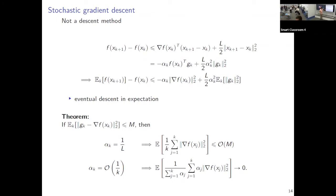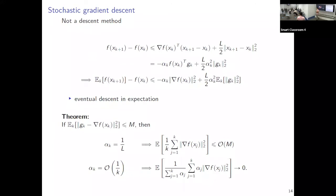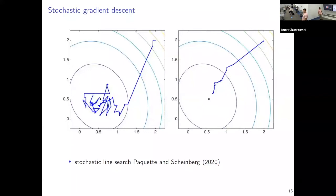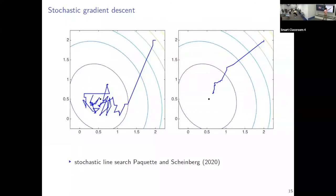One can show, as you would learn in an optimization course, that if the gradient estimates have bounded variance, then with a constant step size, the residuals converge to a neighborhood of some radius that depends on the noise size. If the step size decreases, the residuals go to zero, giving convergence to a stationary point. With constant step size you converge to a neighborhood and oscillate; with a decaying step size you slowly reach the minimizer.